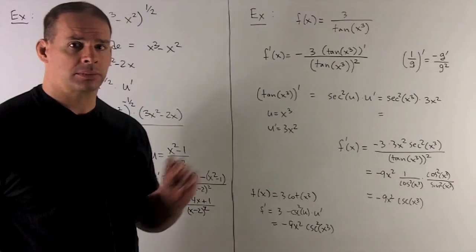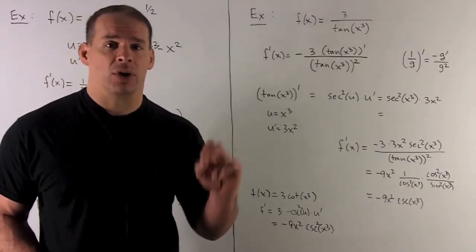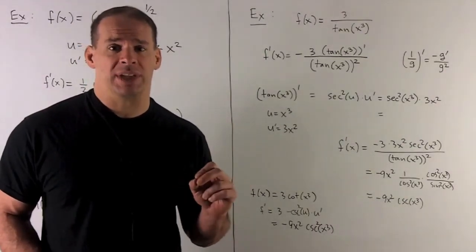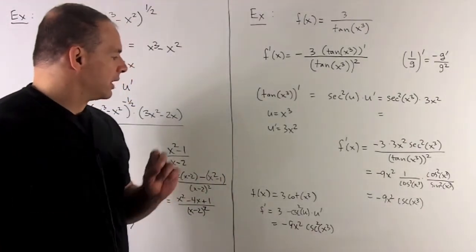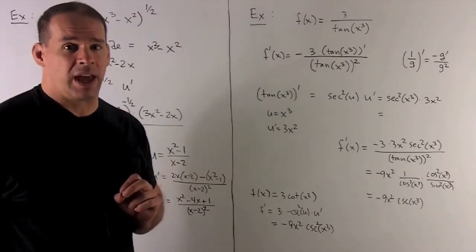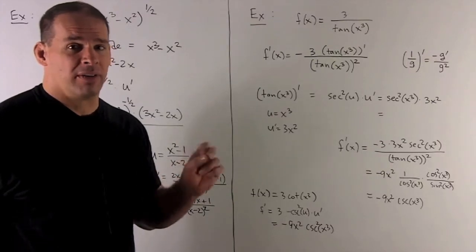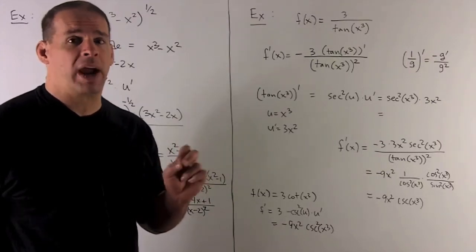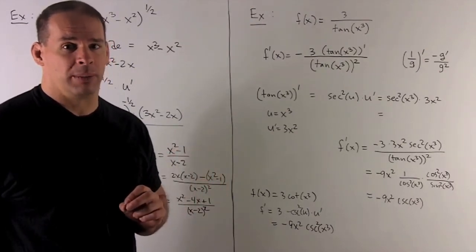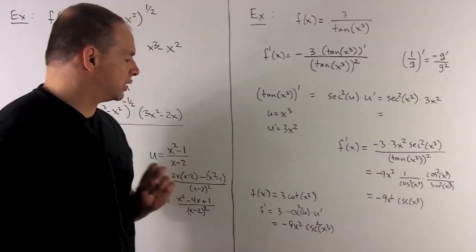An easier way to get this: note that 1 over tangent — which is sine over cosine — is the same as cosine over sine, so that's just cotangent. So we're really looking at 3 cotangent of x cubed. Let u equal x cubed, so u prime is 3x squared. The derivative of cotangent is minus cosecant squared. Put x cubed back in, multiply by the derivative 3x squared. We pick up the minus sign from the derivative of cotangent, and we get the same answer: minus 9x squared times cosecant squared of x cubed.